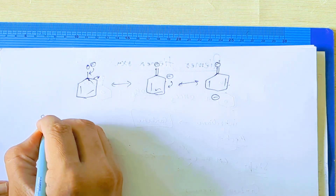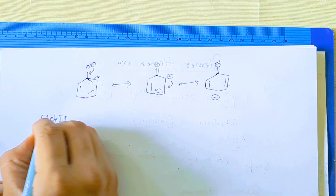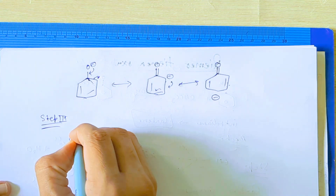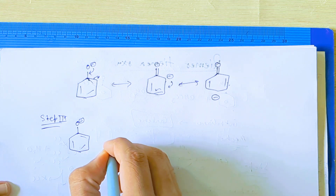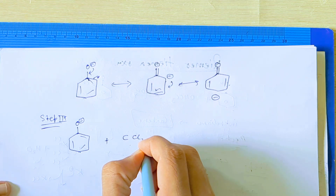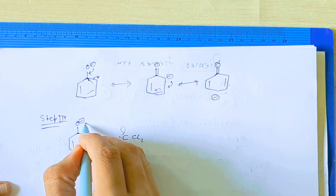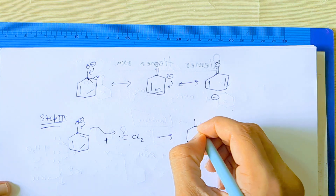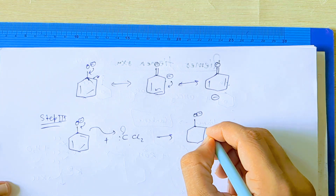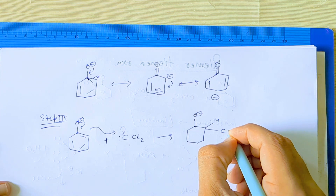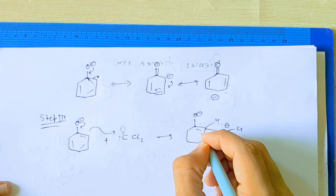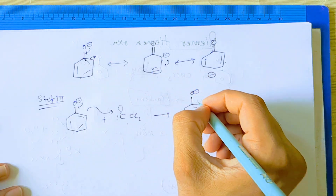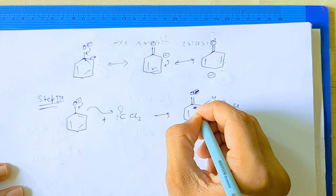Now let's see step 3, that is the electrophilic substitution reaction with carbene. Here is the phenoxide ion and here is carbene — CCl2 with a vacant orbital. The phenoxide will attack on this vacant orbital and gives the ortho-substituted species: C, Cl, Cl with a negative charge on it. Here there is a double bond.